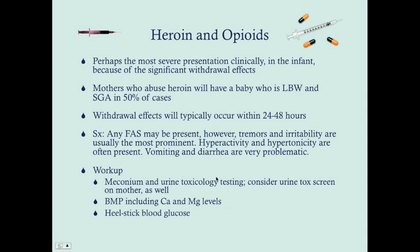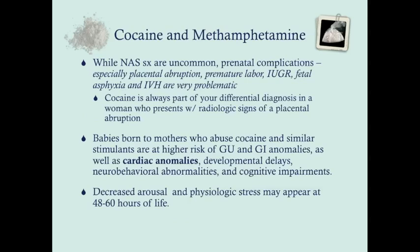For workup, get a meconium and urine toxicology, and consider a urine toxicology screen on the mother as well. Get a metabolic profile including calcium and magnesium levels — hypocalcemia can present very similarly to withdrawal symptoms with tremors, irritability, and increased deep tendon reflexes. Also get a heel stick blood glucose, since hypoglycemia can produce similar effects.